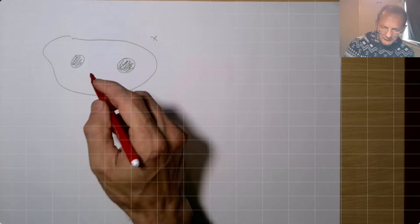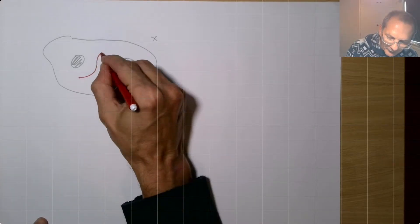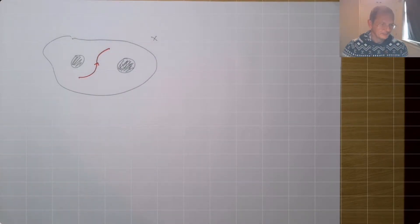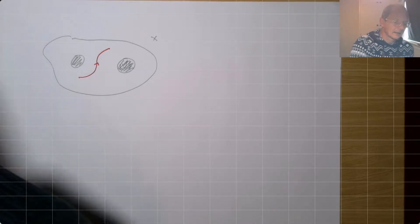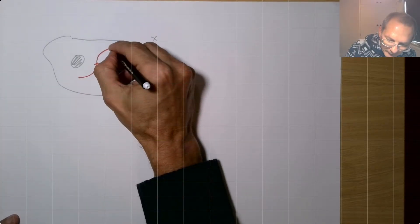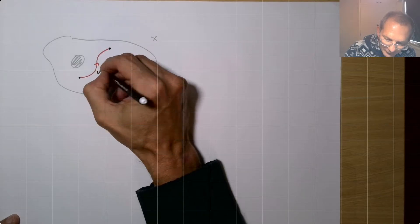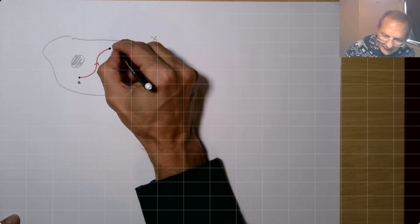So to explain this, well, firstly let's think about a path in this space, like this path here, and it's got some endpoints. So the path is called U, and it starts at point A and ends at a point B.